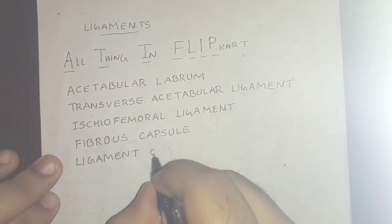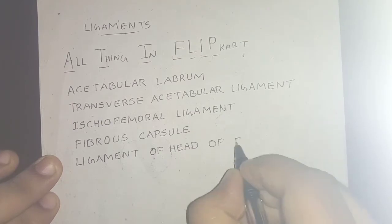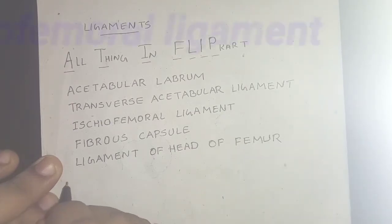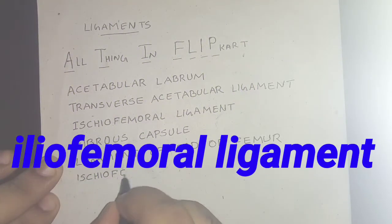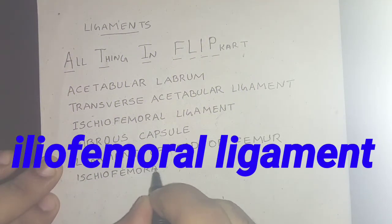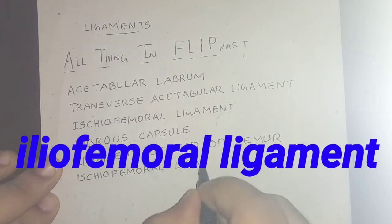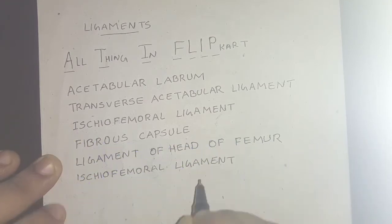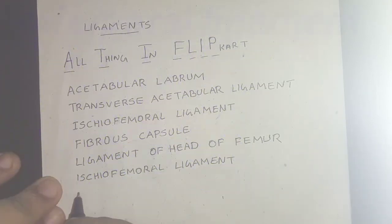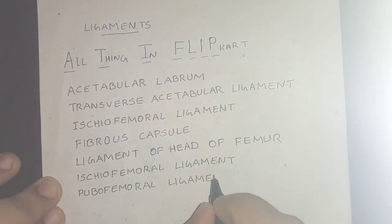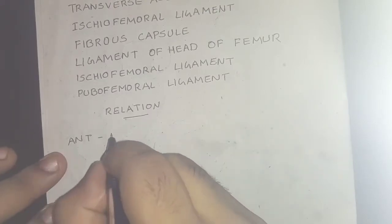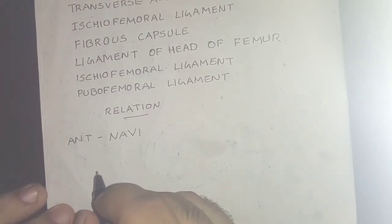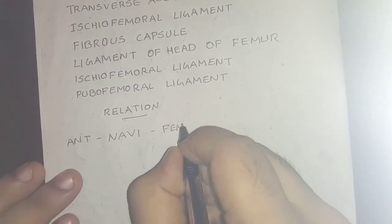The L stands for ligament of the head of the femur, the I is the iliofemoral ligament (note: this was marked as a correction in the video), and the P stands for the pubofemoral ligament.